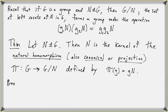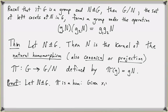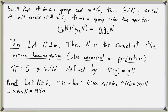For the proof, let N be a normal subgroup of G. First we need to show that pi is a homomorphism. Given any x and y in the group G, pi of xy equals xyN. But by the operation in G mod N, this equals xN times yN, which is pi of x times pi of y. So pi is a homomorphism.